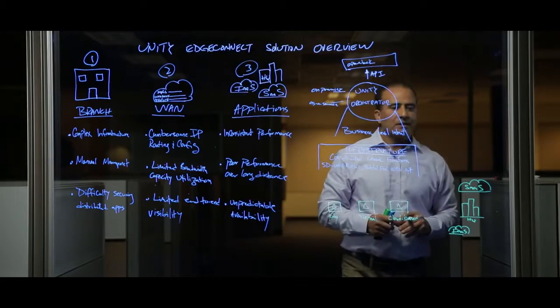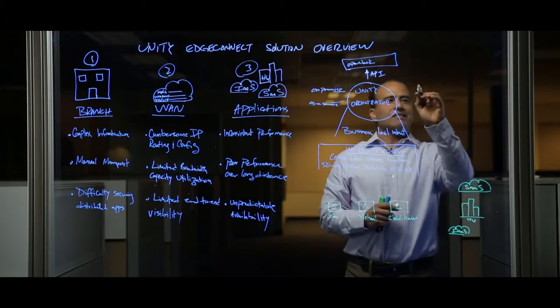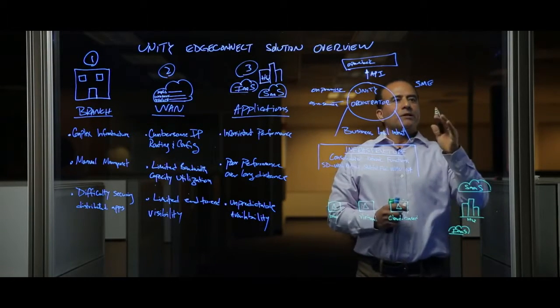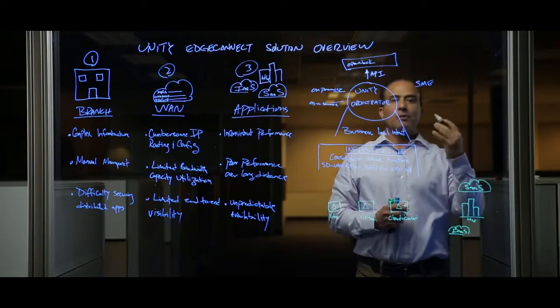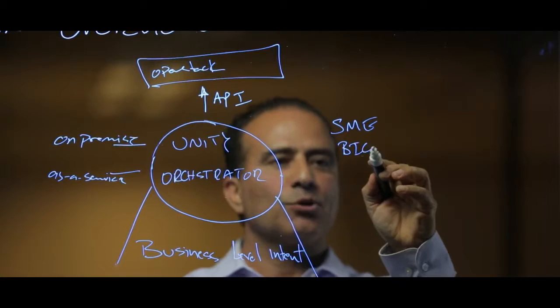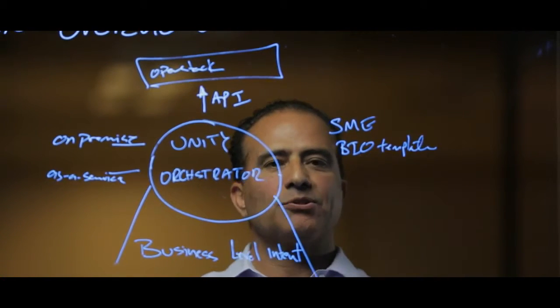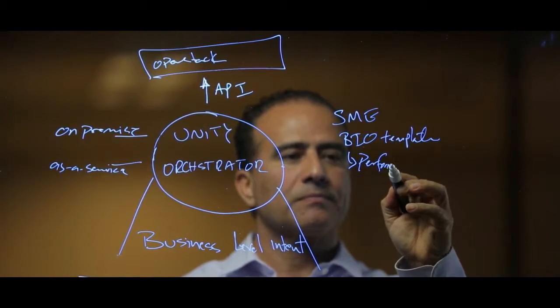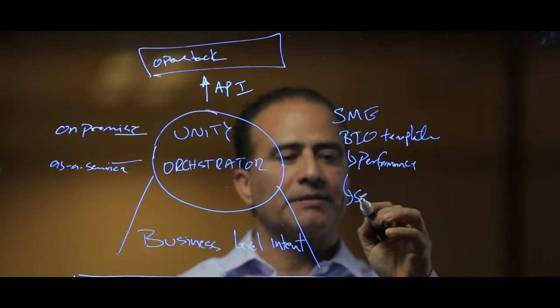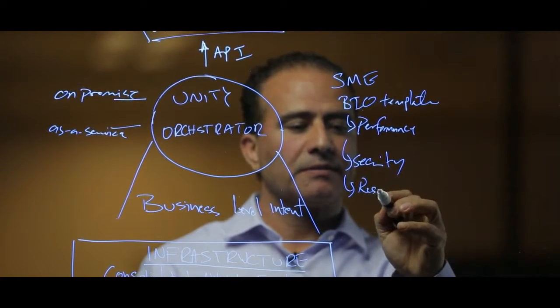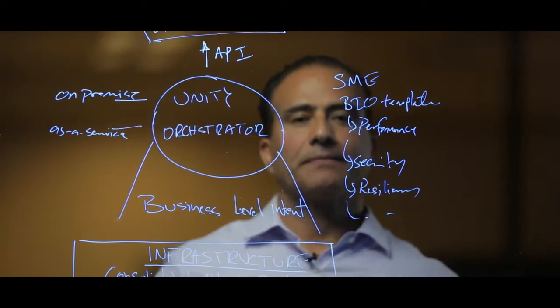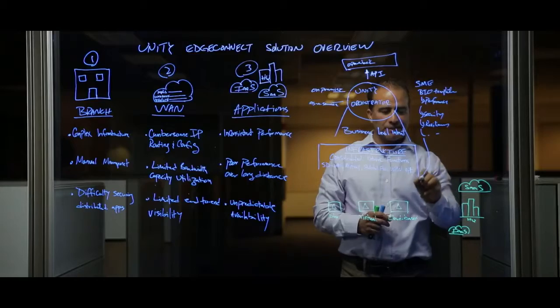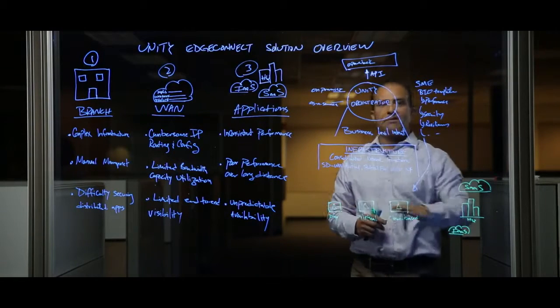So let's take a closer look at how that works. As a subject matter expert in your organization, that could be a network IT admin, what you do is you define and create your policies in the business intent overlay template. And the policies you define here is from a business perspective, and this could be performance, security, resiliency, and so on. Once you define them, they get translated and implemented into your infrastructure once the device is being authenticated.